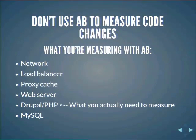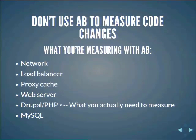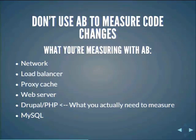Most times I ever see anyone do benchmarks — especially on Drupal.org — they're always using stuff like AB. It isn't awful, but if you're making code changes, like I just made a small code change and now I'm going to run AB to figure out if it's faster or slower — why would you want to measure that many things if you only need to measure one? There are a lot of different ways that test can get messed up with a confounding variable. For code changes, just use XHProf.